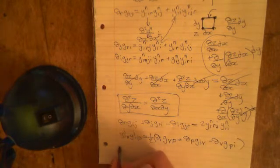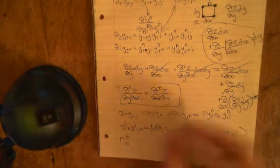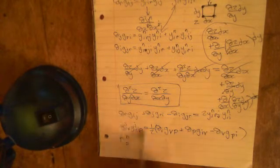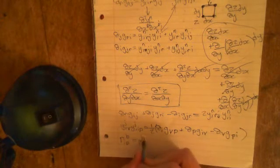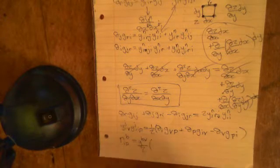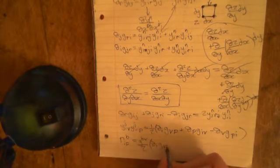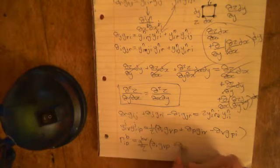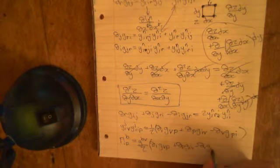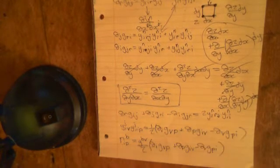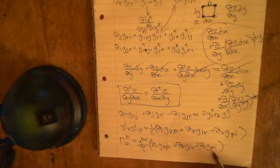So finally, the Christoffel symbol, by our original definition, gamma BIP was equal to all of this thing multiplied by GBV. So all we need to do is now find, well, not multiply, contract it with, DIGVP plus DPGIV minus DVGPI. So that is our expression for the Christoffel symbol in terms of the metric tensor.